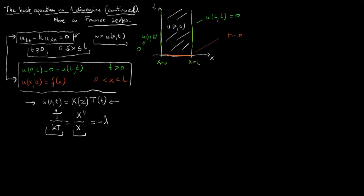Applying the heat equation and boundary conditions, we were able to show that lambda, although we didn't assume much about it among all complex numbers, is actually supposed to be a non-negative real number. Last time, for simplicity, I assumed this constant is not equal to zero.